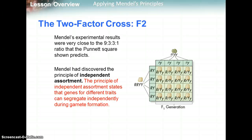Mendel's results were very close to the 9:3:3:1 ratio expected from this type of cross. He had discovered the principle of independent assortment — that genes for different traits can segregate independently during gamete formation. So some sperm or egg cells can have big R and big Y, little r and big Y, big R and little y, or little r and little y, because these two genes can segregate independently of one another.